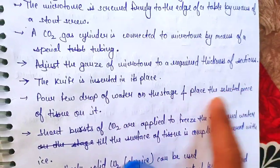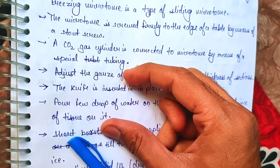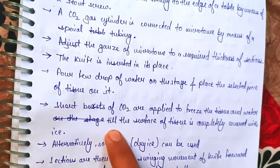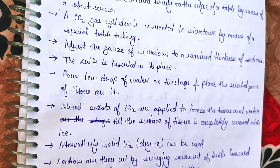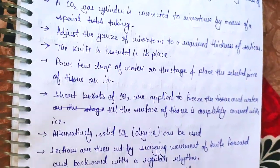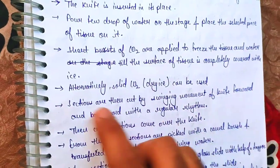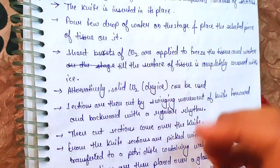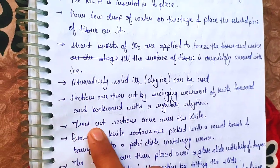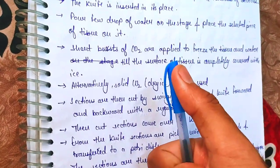Pour a few drops of water on the stage and place the selected piece of tissue on it. Then short bursts of CO2 are applied to freeze the tissue and water until the surface of the tissue is completely covered with ice. We can also use dry ice as solid CO2. Then, using the knife, the sections are cut.